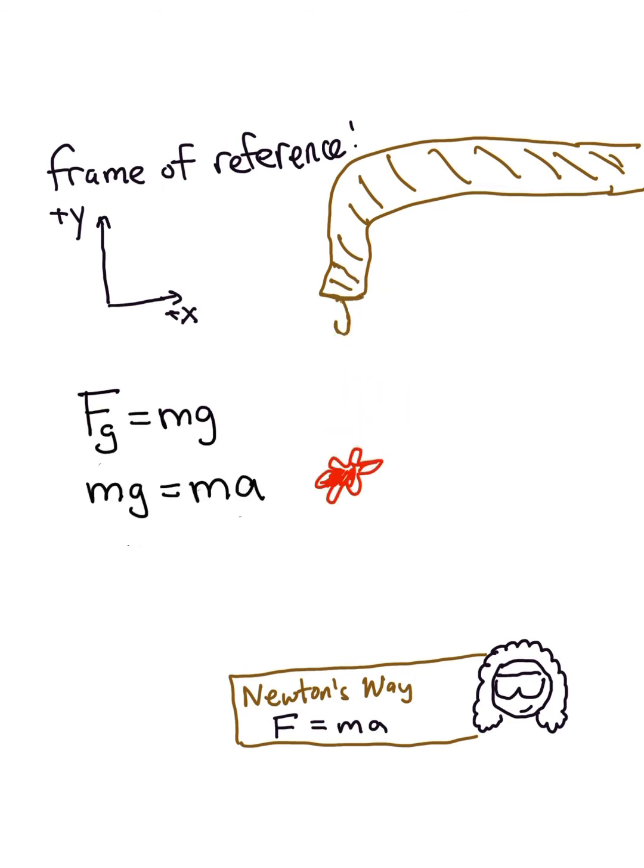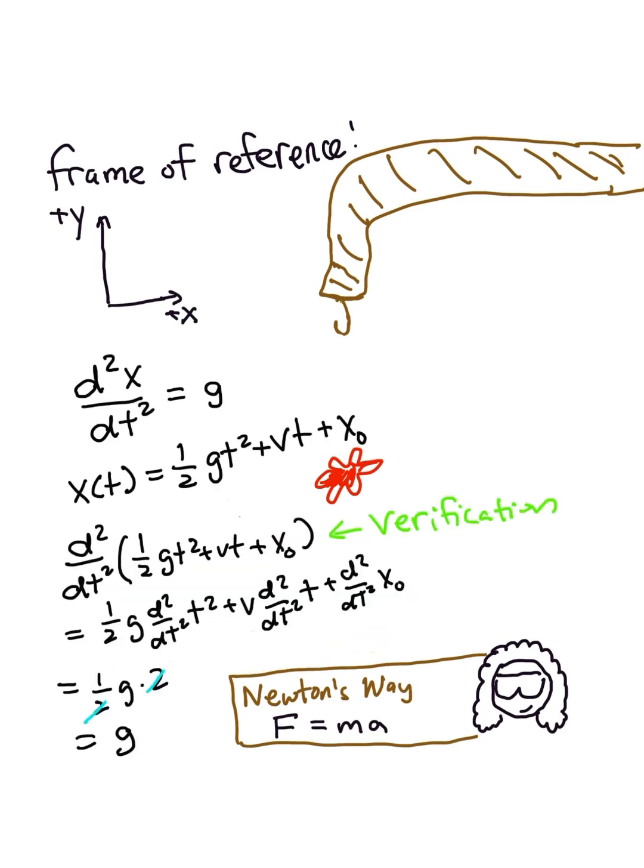By solving F equals MA, we can get this equation describing how the position of the object evolves over time.